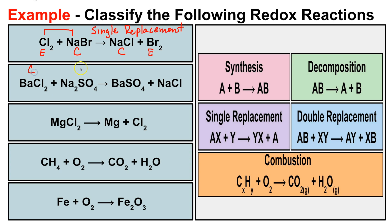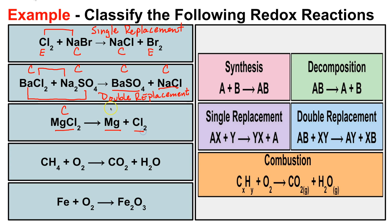The next reaction shows a compound reacting with a compound, producing a compound plus a compound. Barium and sulfate bond together to produce barium sulfate, and sodium and chloride bond to produce sodium chloride. That is a double replacement reaction. The following reaction shows a compound breaking down into the two elements that make it up — that is a decomposition reaction.